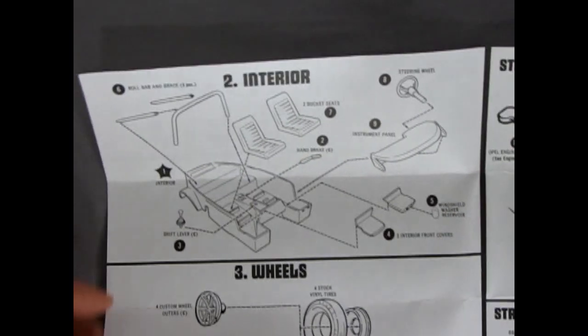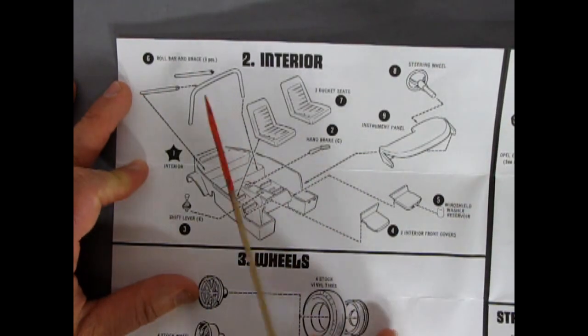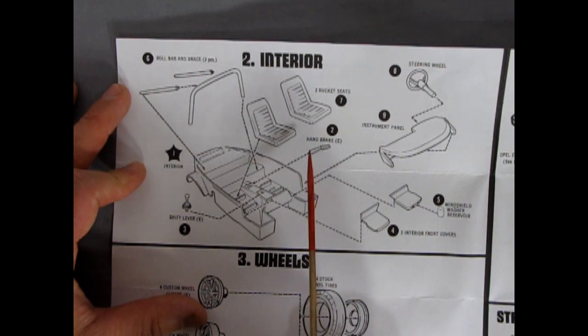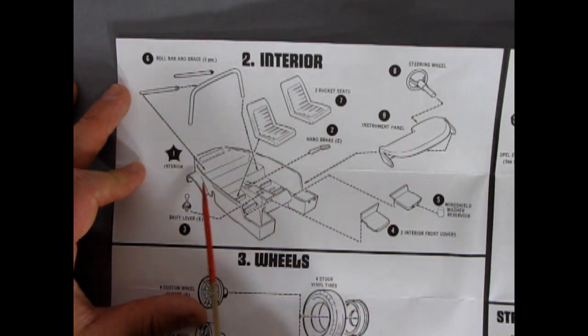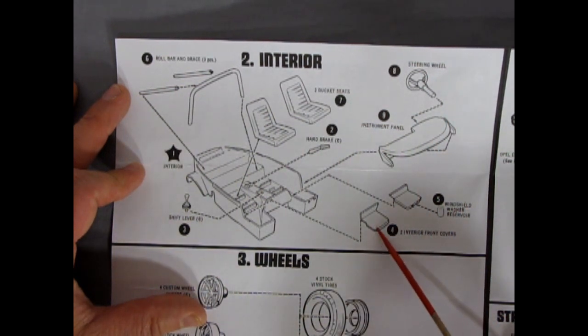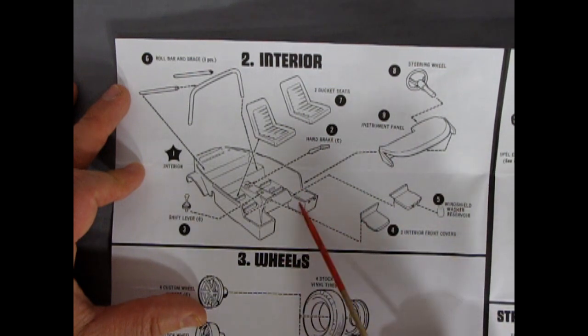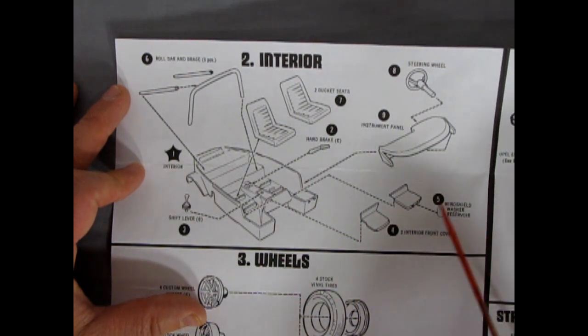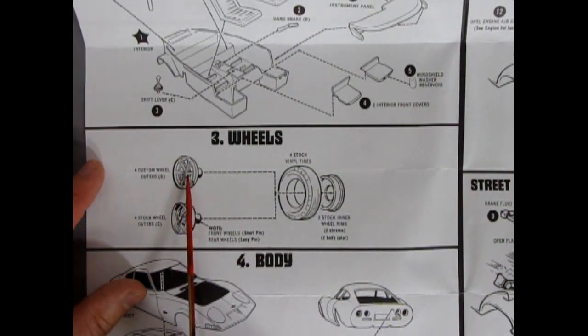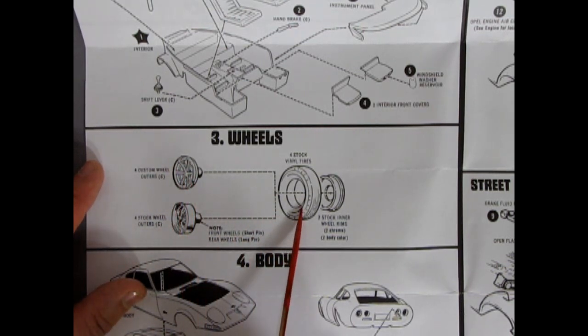So then we crack this over into our interior. And there we've got a roll bar with braces. Shift lever that goes in. Two bucket seats and your brake handle. Interesting. The back part here is sort of shaped like a 63 Corvette. We've got our steering wheel instrument panel. We have these two little interior front covers that go on there for your feet to sit in. Windshield washer reservoir. And then we get our wheels. Then you actually have a choice of stock wheels down here or these custom style. Then you have four vinyl tires and the wheel backs.